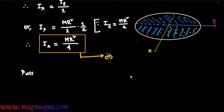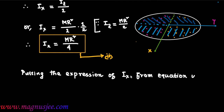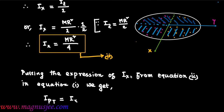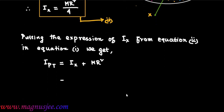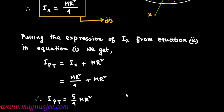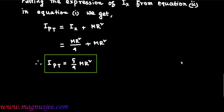Putting the expression of Ix from Equation 2 into Equation 1, we get: I_pt = Ix + MR² = MR²/4 + MR² = 5/4 MR². Therefore, I_pt = 5MR²/4.